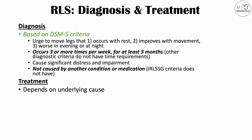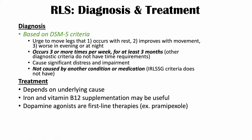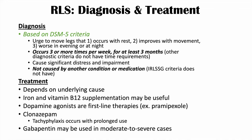Treatment depends on the underlying cause. If iron deficiency or vitamin B12 deficiency is identified, supplementation with those nutrients is important. Dopamine agonists — such as pramipexole — are first-line therapies. Clonazepam, a benzodiazepine, can also be used, though tachyphylaxis — where the medication's effect wears off over time — can occur with prolonged use. Gabapentin may be used in moderate to severe cases.